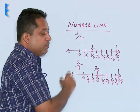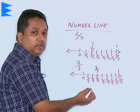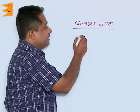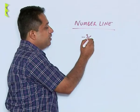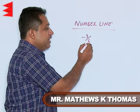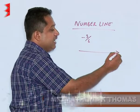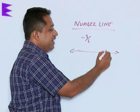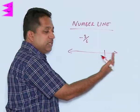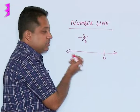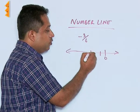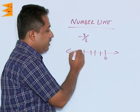We can also plot negative rational numbers on the number line. For example, let us plot minus 3 by 6. Negative numbers lie on the left side of 0. So we divide the portion between 0 and minus 1 into 6 equal parts.